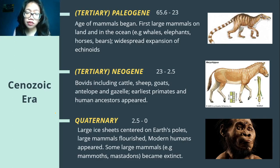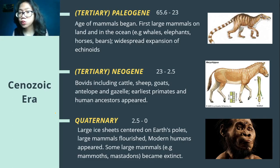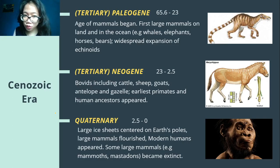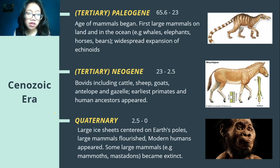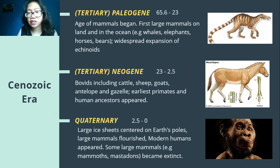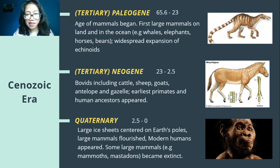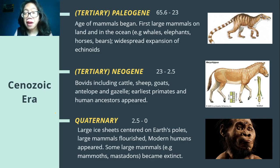During the Paleogene Period, the first in the Cenozoic Era, the age of the mammals began. Mammals started to grow in size, and the first large mammals appeared on land and in the oceans — elephants, the ancestors of horses and bears, and then the widespread expansion of echinoids, which are those spiky invertebrates underneath our oceans. The whales are mammals because they used to be on land and then evolved back into the ocean — that's why they still have hip bones.